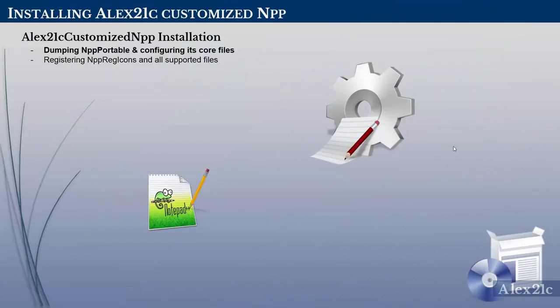I have decomposed the setup into two phases. First, we will dump the Notepad++ portable into the custom installation directory and configure its core files. Second, we will register the Notepad++ icons and all supported files. So let's follow the first phase — dumping Notepad++ portable.